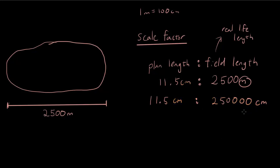So on both sides, you now have centimeters. When you have the same units on both sides, then you don't have to write the units anymore. So you just write 11.5 to 250,000. So that is nearly simplified. Now what we want to do is we want the left hand side to be equal to 1.